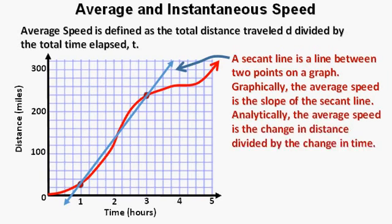Analytically, the average speed is the change in distance divided by the change in time. Here's how the formula is often seen. Average speed equals the absolute value of delta D divided by delta T.